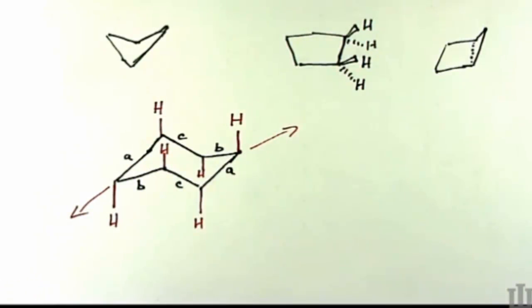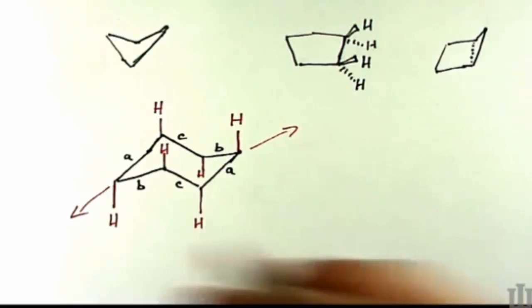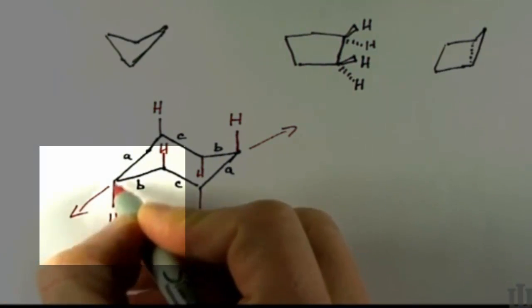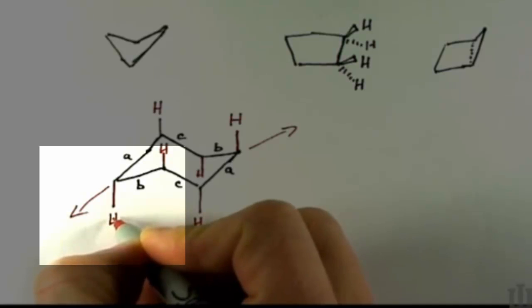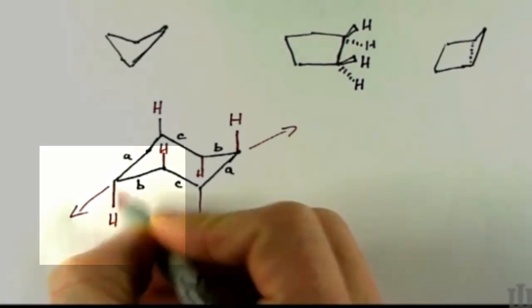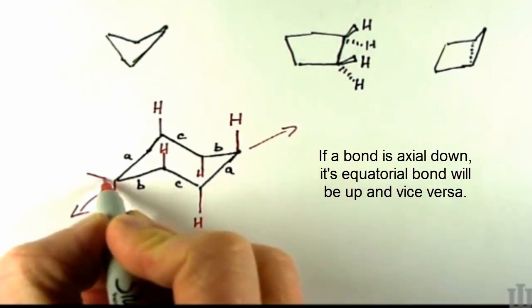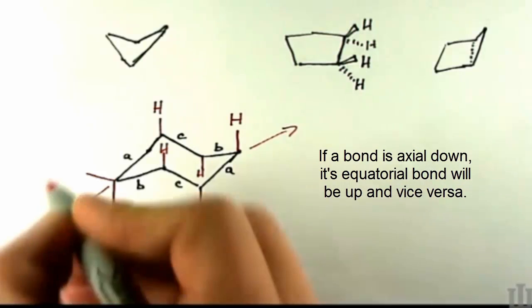They're helpful in guiding you where to put the equatorial hydrogens, because if I take my first carbon that I dealt with, it had axial down. The other position on this carbon has to be up. So it's equatorial and up, and it's going to go right here.